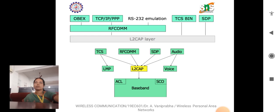This picture represents the organization of the baseband layer and L2CAP layer. The baseband layer controls synchronous connections with ACL and SCO. SCO and ACL are the major links of the baseband protocol. LMP, TCS, RF communication, SDP, audio, and voice are all controlled by the L2CAP layer.